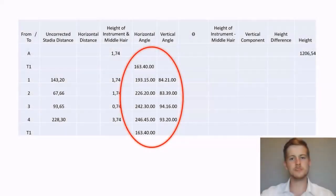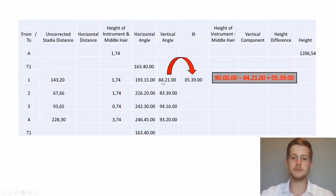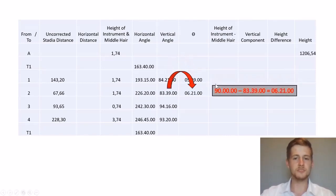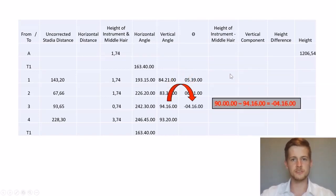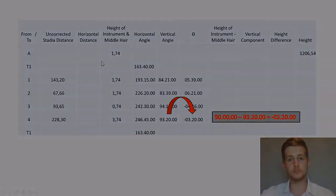Now we're going to start with our theta calculation. We're going to calculate our theta, which we'll use for our horizontal distance as well as our vertical component. The first thing we do is say 90 degrees minus our vertical angle — that is how we calculate each of our thetas. We'll do this for each of our points and use these thetas for the next calculation.